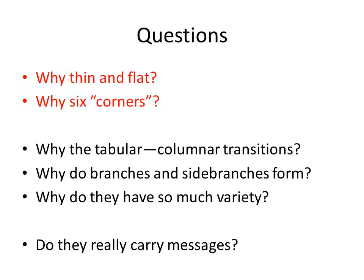Here are our first two questions from Kepler, and some others we'll address: why do we have these sharp tabular-to-columnar transitions? For dendrites, why do branches and side branches form? We often hear 'are no two alike?' — but a better question is why do they have so much variety? And because of a recent book, I often hear: do the crystals really carry messages? I'll admit you don't need answers to these to further your research on winter storms, but if you're like me you probably get asked some of them. I hope my answers here will help. Next: how this crystalline order comes about.